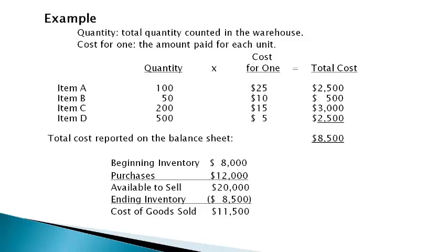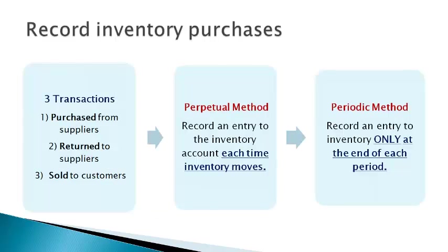The warehouse costs to purchase and store inventory are reported on the income statement as operating expenses. There are three major transactions that change inventory: purchases, returns, and sales. There are two methods commonly used to record these inventory transactions. A company may choose to record a journal entry to the inventory account each time inventory moves — this is the perpetual method. Or a company may choose to account for the total change in inventory at the end of each period — this is the periodic method. The method used is dependent upon the type of accounting system a company has.